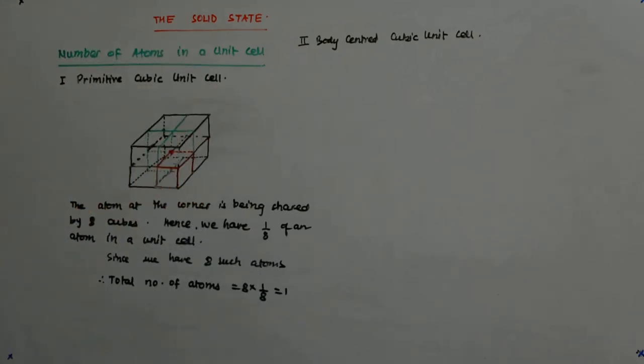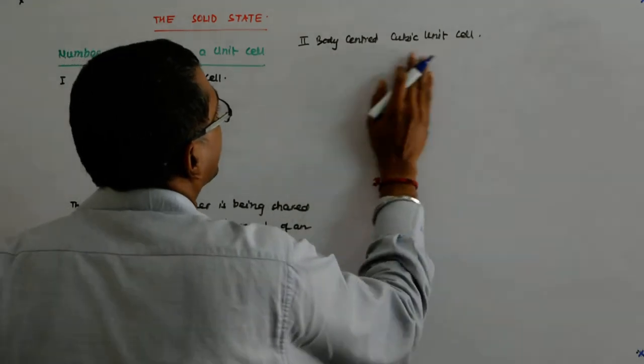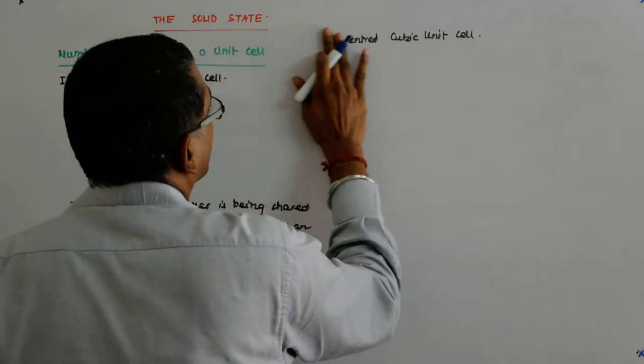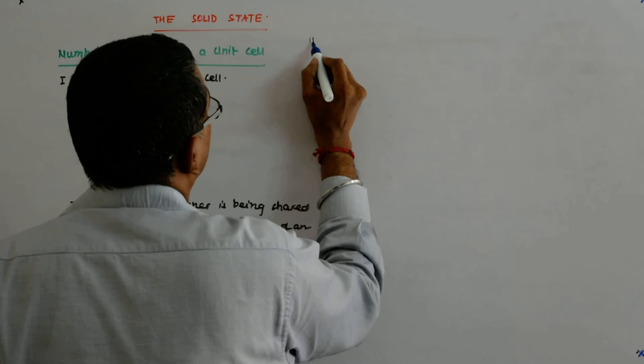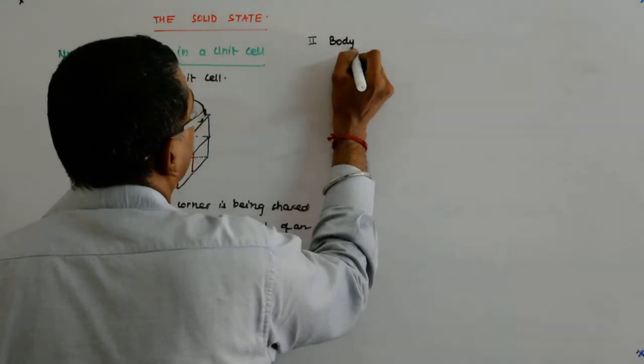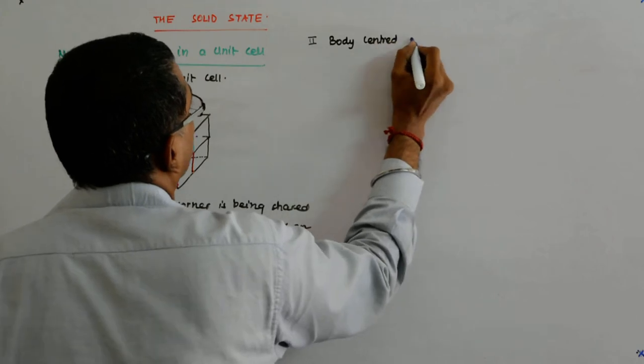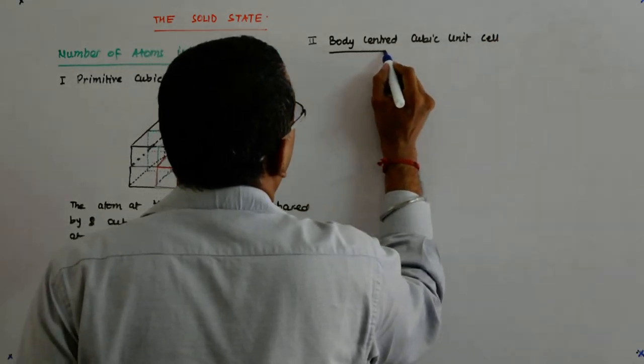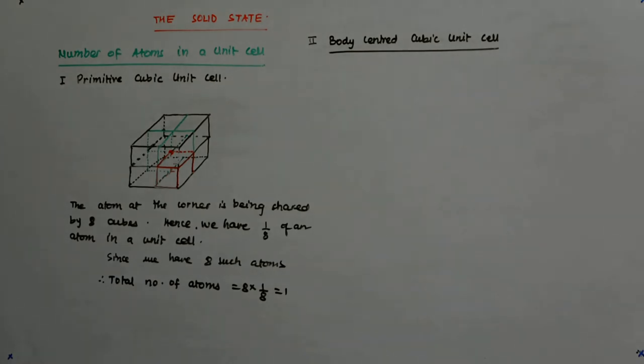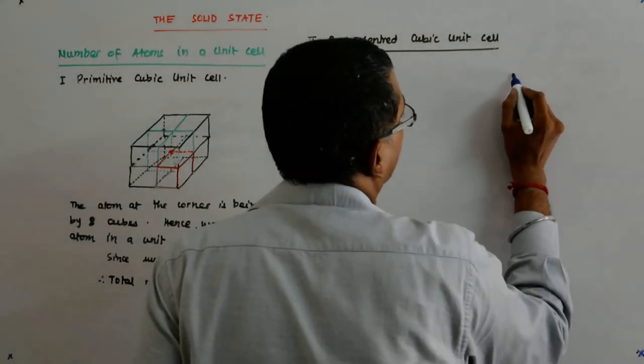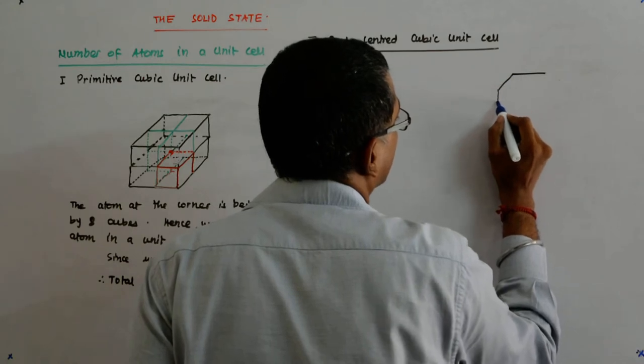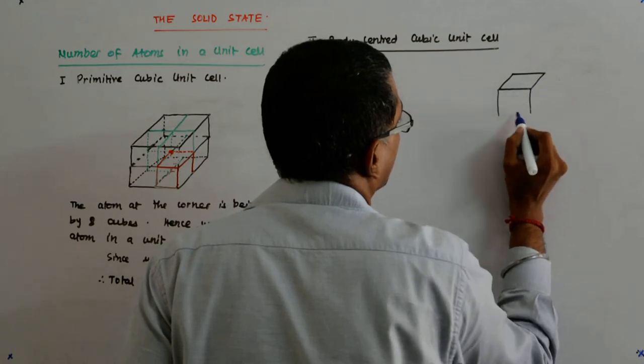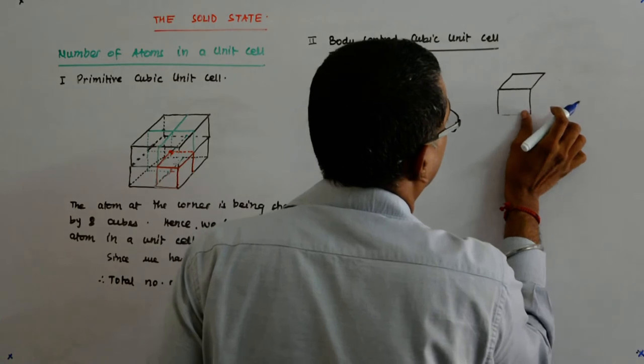Fine. Now, we come to the body-centered cubic unit cell. Now, it is the same thing. So, it is a cube, obviously like this.